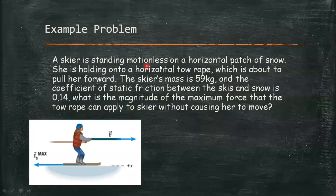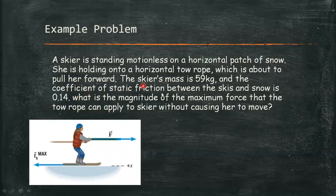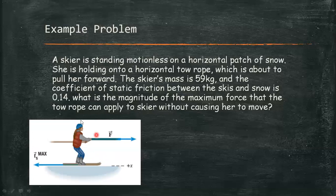Example problem: A skier standing motionless on a horizontal patch of snow is holding onto a horizontal tow rope about to pull her forward. The skier's mass is 59 kg and the coefficient of static friction between the skis and snow is 0.14. We need to find the maximum force the tow rope can apply to the skier without causing her to move. Since she is not moving, we are dealing with static frictional force.